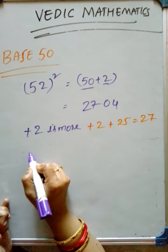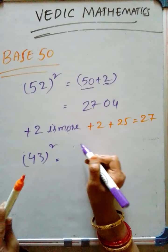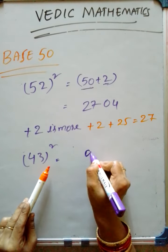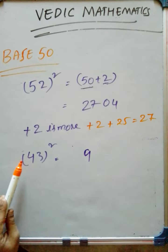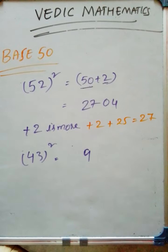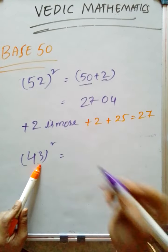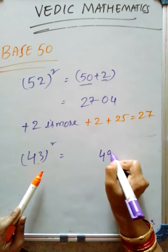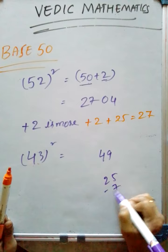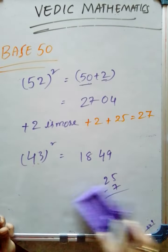I am taking another example. 43 square. 7 square is 49. How much we have to subtract from 25? 25 minus 7. That is nothing but 18. So, 1, 8, 4, 9 is the answer — 1849.